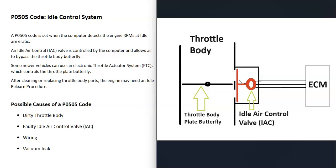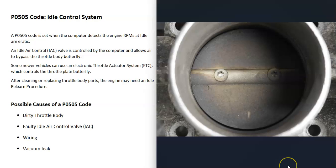By using the idle air control valve, the computer can control how much air goes into the engine and regulate the idle. When you get a P0505 code, the computer is seeing that the idle is erratic — the RPMs are too high, too low, or all over the place — so it sends out this P0505 code for troubleshooting.